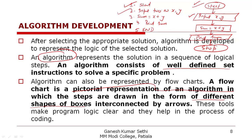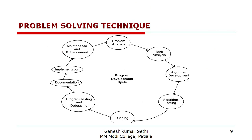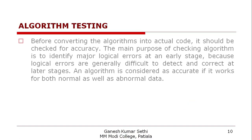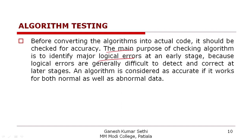After writing the algorithm and flowchart, the next step is to test the algorithm. Testing means checking whether the algorithm or flowchart has any errors. If we apply known data whose output we already know, we verify if the correct result is produced. If there is an error in the algorithm, it will accumulate in the programming. But if detected now, it will make our program error-free. The main purpose is to find logical errors at early stages. The algorithm must work correctly for both normal and abnormal data.